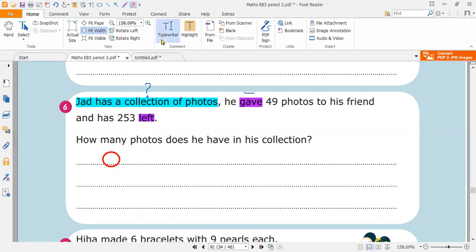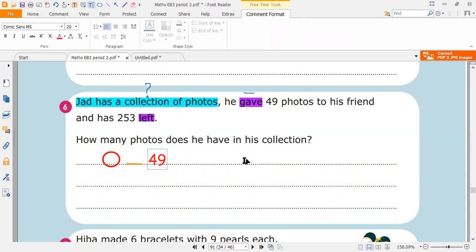So here we don't know the number of the photos that he had at first, but we know that he gave 49 photos to his friend and the answer or the photos left with him is 253.